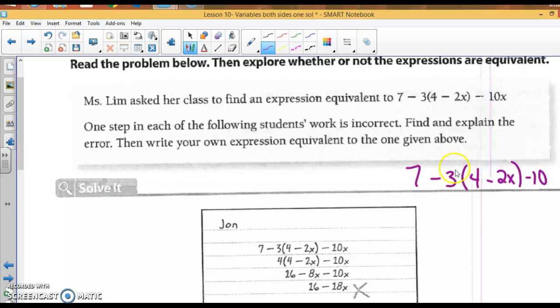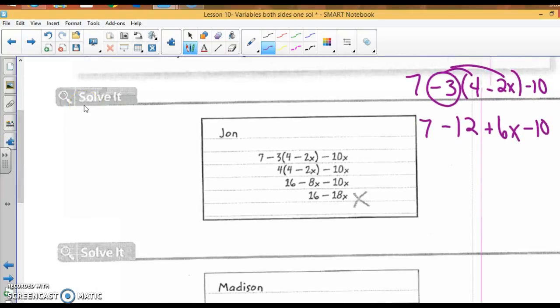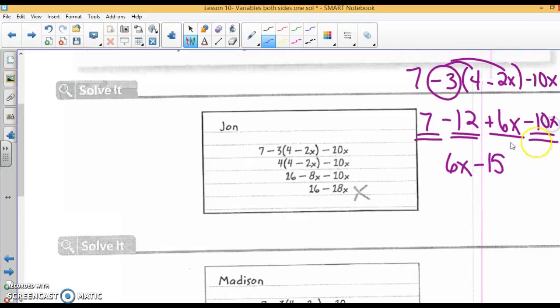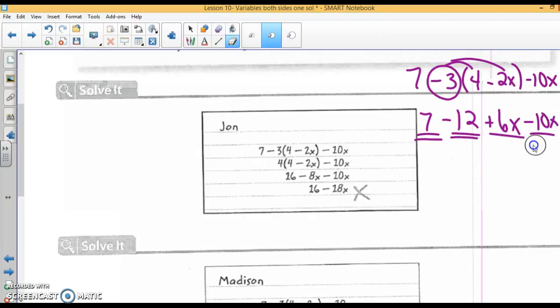The first thing you need to do here is distribute the negative 3. We're going to bring down the 7. Negative 3 times 4 is negative 12. Negative 3 times positive 2x is positive 6x. Bring down the minus 10. Now we'll combine like terms. I don't have anything to add to the 6x. Wait, you know what? I copied the problem wrong. This is an x, this is an x. There's a negative 10x there. So when I combine like terms, 6x minus 10x is negative 4x, and 7 minus 12 is negative 5. So that's what we should end up with: negative 4x minus 5.